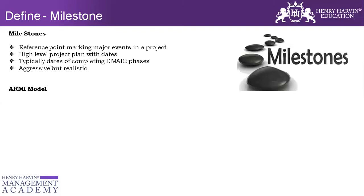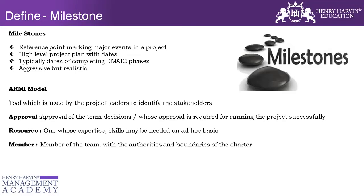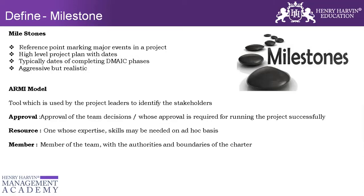There is a model known as the ARMI model, which is a tool that helps us identify the roles and responsibilities of each and every team member in a given project. A stands for Approval — the person who gives decisions and approvals at each and every stage, enabling the project to move to the next phase. R stands for Resource — a person who is not part of the project throughout the entire journey from Define to Control, but whose expertise is required on an ad hoc basis.